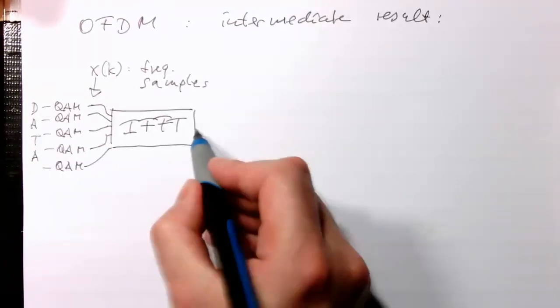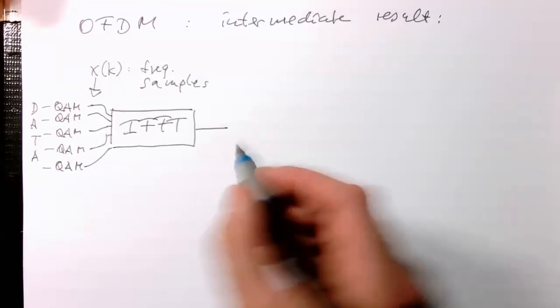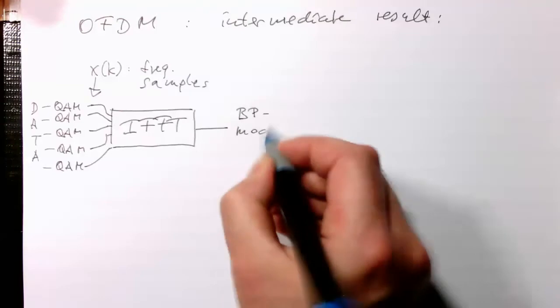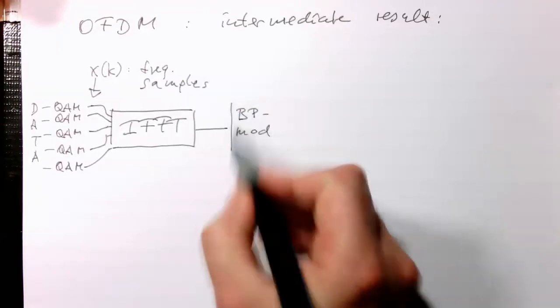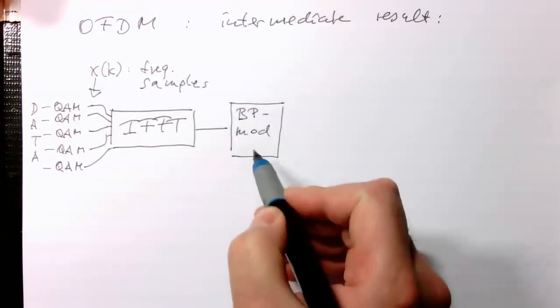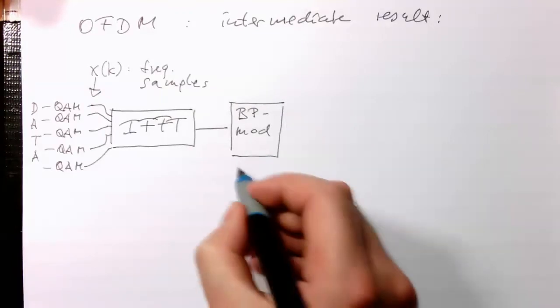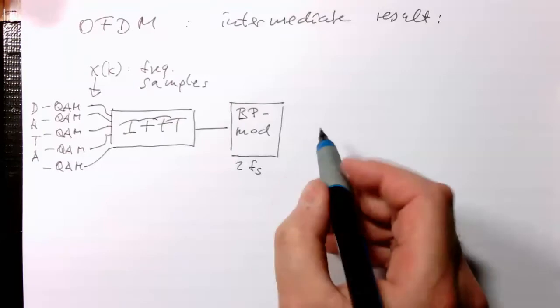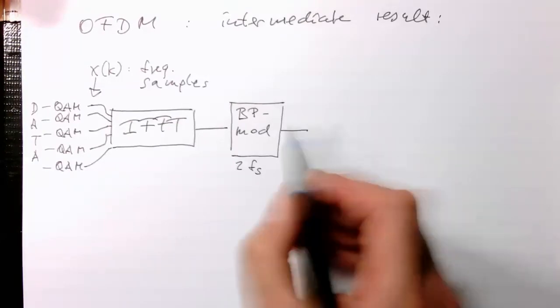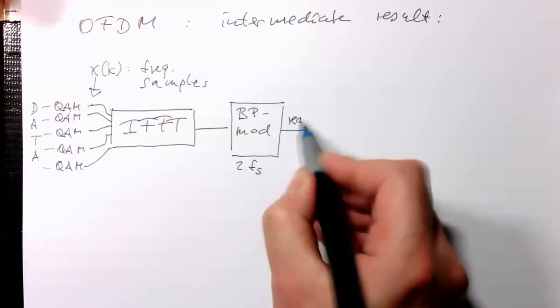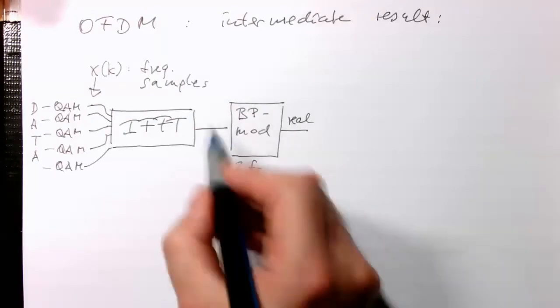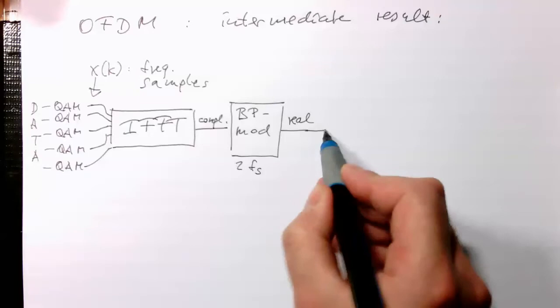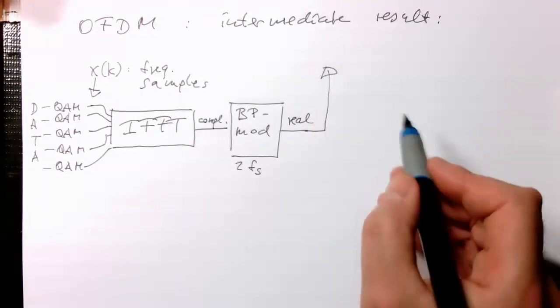And so this we are sending out to our bandpass modulator. And this is running twice the sampling rate fs. And then the output is a real valued sequence, so that's here complex. And this real valued sequence we can transmit, of course.